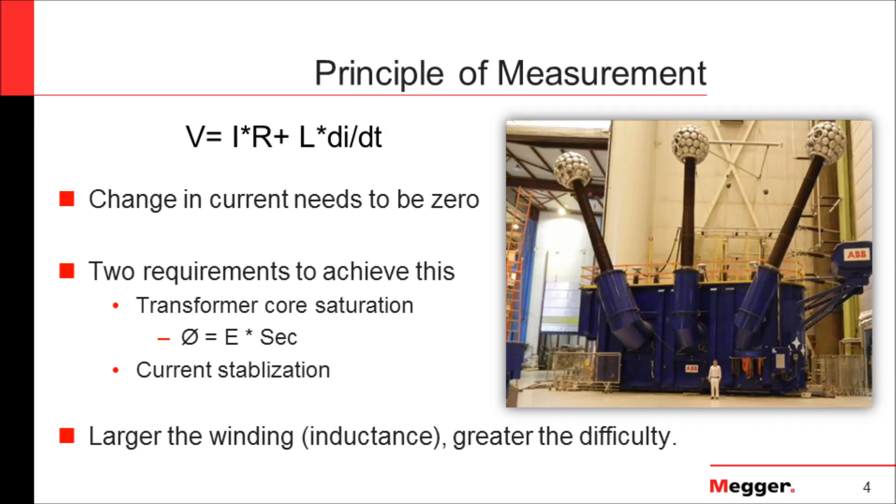When we're talking about this, technically what we need to do is ensure the change in current is zero. For this to occur, we need the transformer core to saturate. In order for the transformer to saturate, we apply the relationship Ø = E × Sec, where the time in seconds is what is required. If you look at this picture in front of you, you will see that the amount of time needed would be higher based on the voltage rating of that transformer. The time to stabilize might be very different from something like a pole-top transformer or any of your small power transformers.